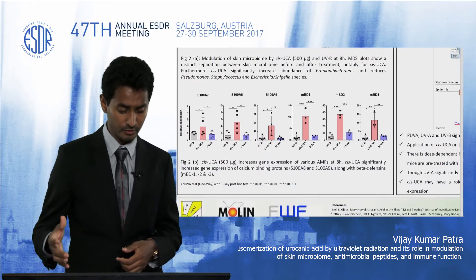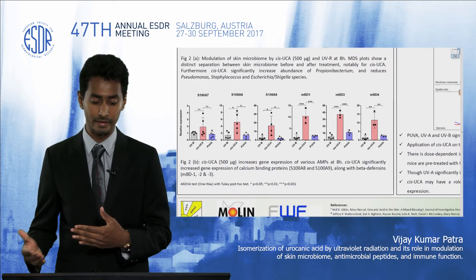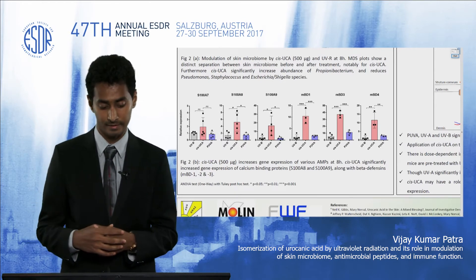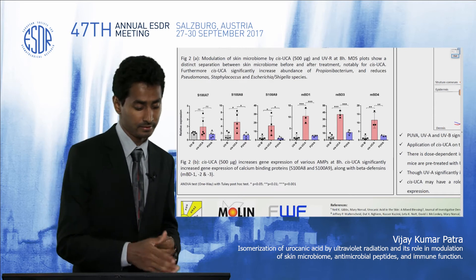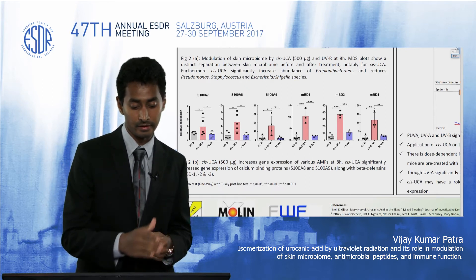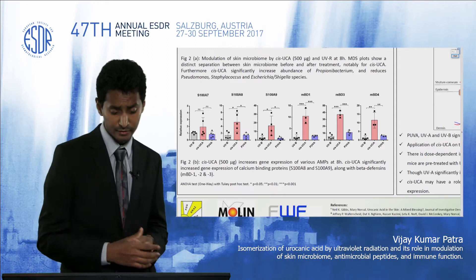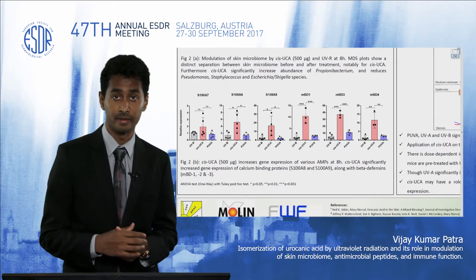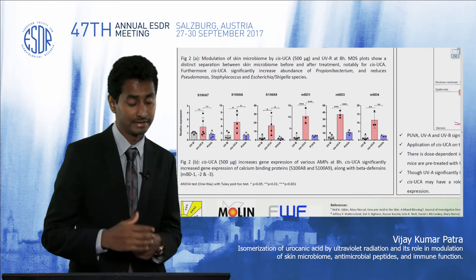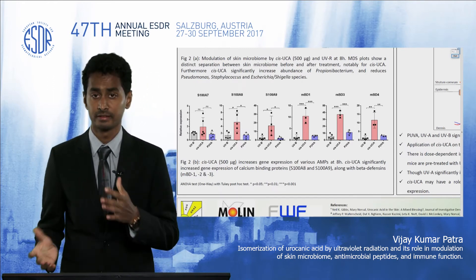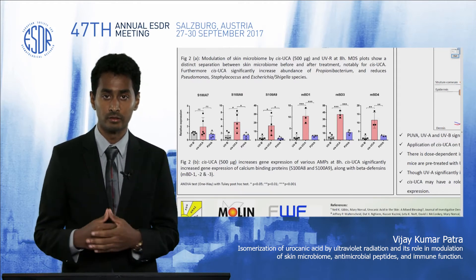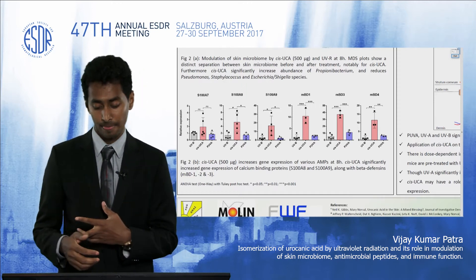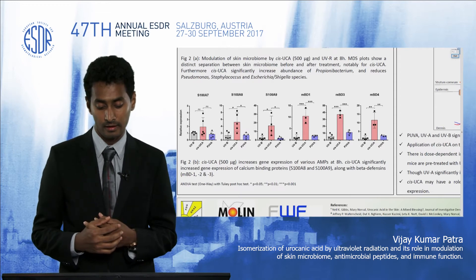The next question was how cis-UCA affects antimicrobial peptides, which maintain homeostasis between the skin microbiome and the skin's immune system. We looked at various antimicrobial peptides such as calcium-binding proteins S100A7, A8, A9, and beta-defensins. As seen in the graph, upon application of cis-UCA on the skin, most of the antimicrobial peptides were significantly upregulated, except for psoriasin. This was the first indication that cis-urocanic acid is modulating both bacteria and the innate immune system.